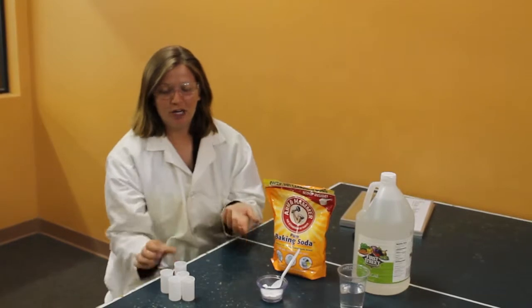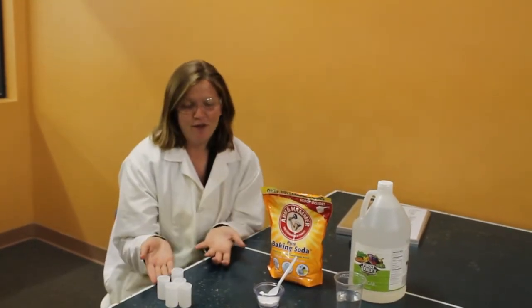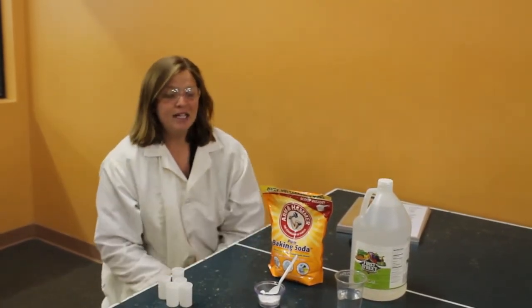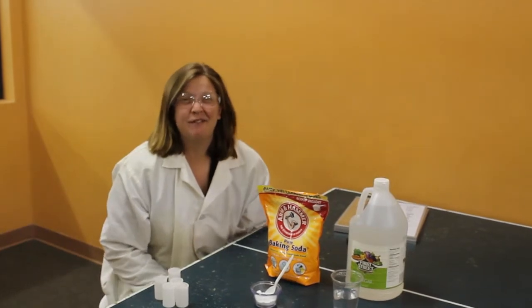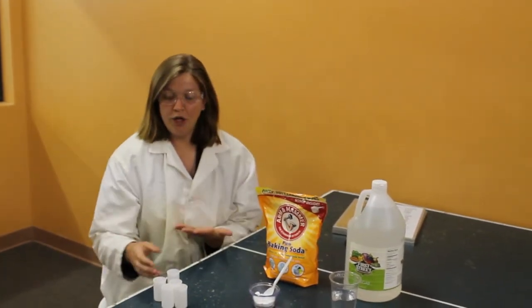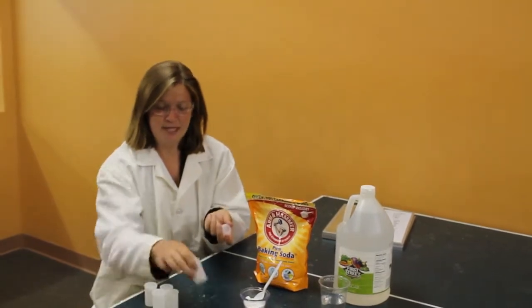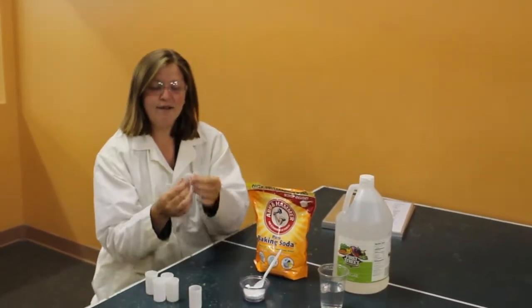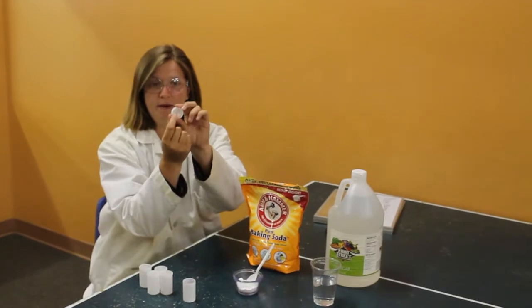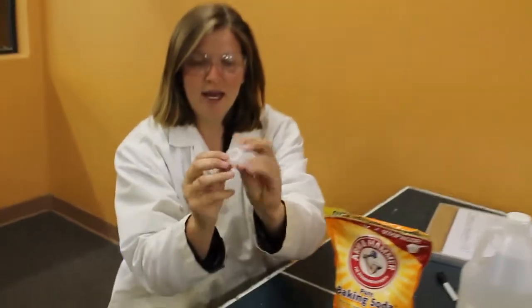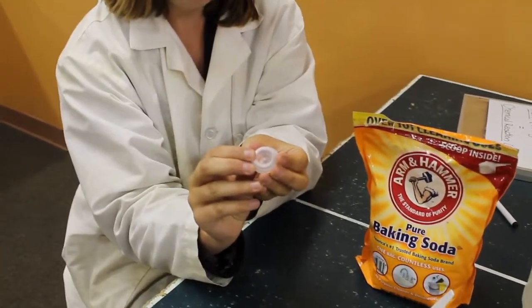For this experiment we're going to be making rockets out of these materials and to do that we're going to follow a really specific procedure. So what you're going to need to do is take the lid off of the canister, set it aside for now and then find the well. So there's a little bit of a hole right in the middle of it and we're going to fill that hole with baking soda.